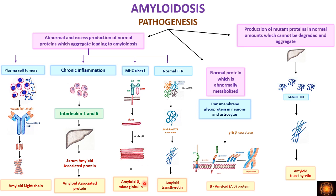The fourth example is the transthyretin molecule. The normal transthyretin molecule is a tetramer that dissociates into monomers; these monomers undergo polymerization and form the amyloid fibril, called amyloid transthyretin protein. These are the conditions where normal proteins accumulate and lead to amyloidosis.